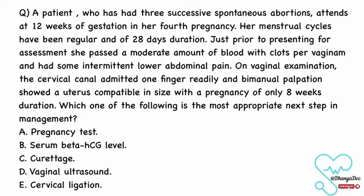A patient who has had three successive spontaneous abortions attends at 12 weeks of gestation in her fourth pregnancy. Her menstrual cycles have been regular and of 28 days duration. Just prior to presenting for assessment she passed a moderate amount of blood with clots per vaginum and had some intermittent lower abdominal pain. On vaginal examination the cervical canal admitted one finger readily, and bimanual palpation showed a uterus compatible in size with a pregnancy of only eight weeks duration. Which of the following is the most appropriate next step in management? Options: A — pregnancy test, B — serum beta-HCG level, C — curettage, D — vaginal ultrasound, E — cervical ligation.